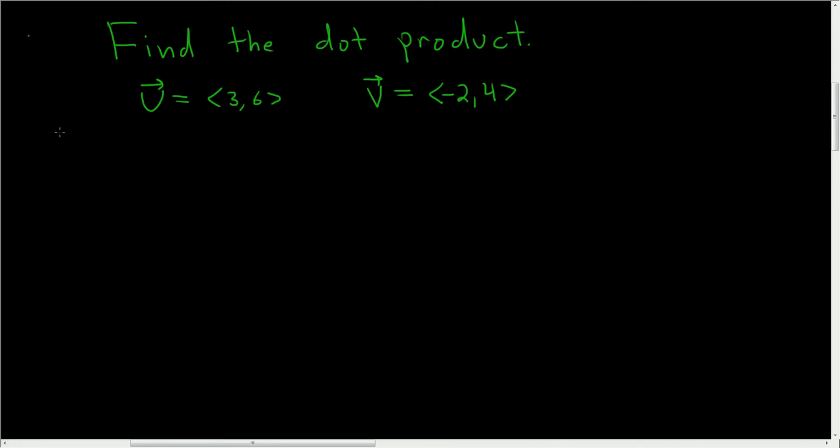We're being asked to find the dot product. This is extremely easy. So we have the vector u, and we're finding the dot product of that vector with the vector v.